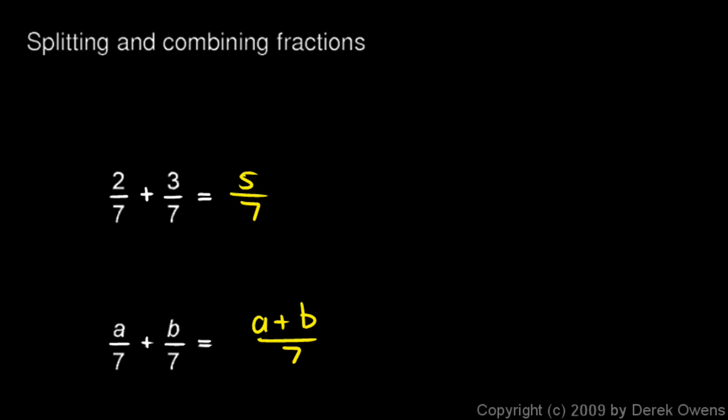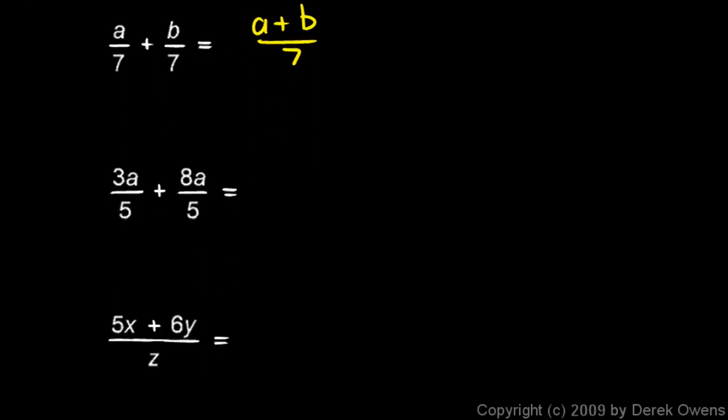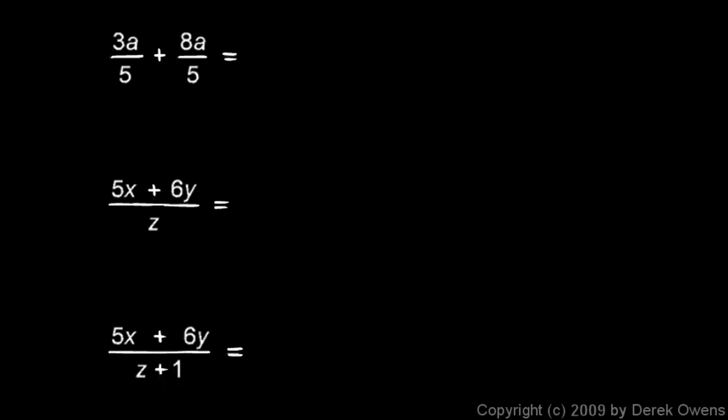Sometimes the result can be simplified. Watch this: 3a over 5 plus 8a over 5 would be 3a plus 8a over 5. And the numerator here, 3a plus 8a, would be 11a. So we get 11a over 5. We've just simplified our numerator a little bit.